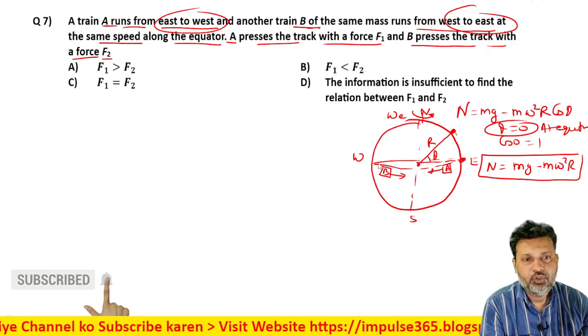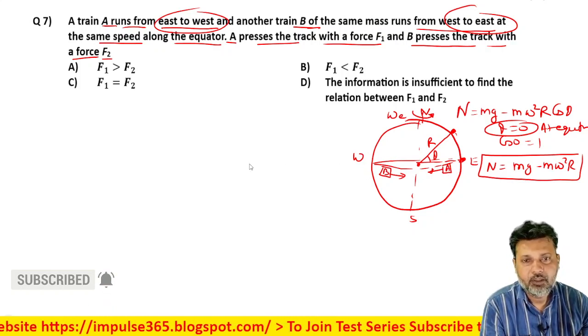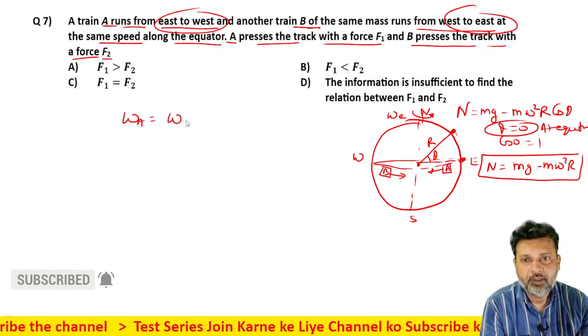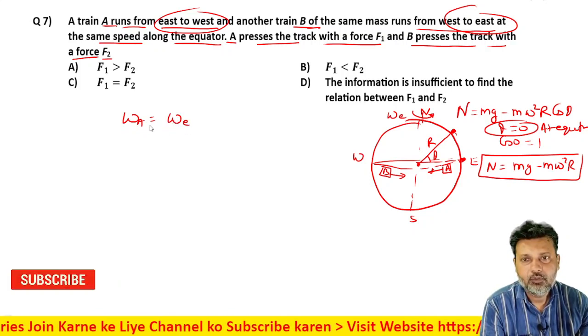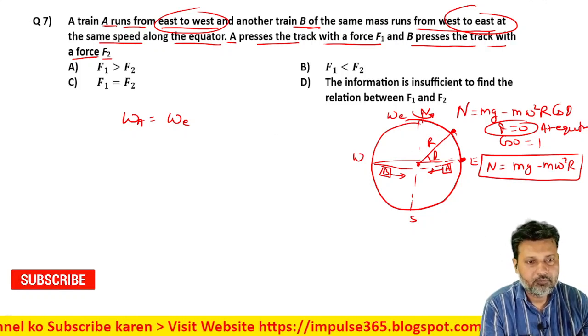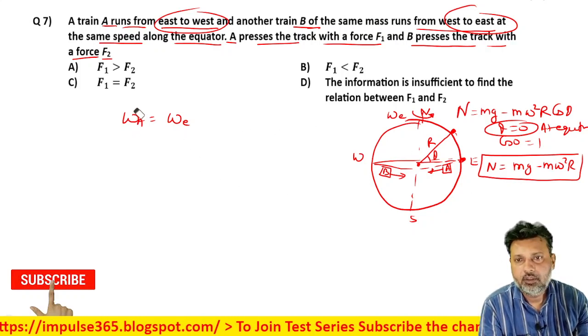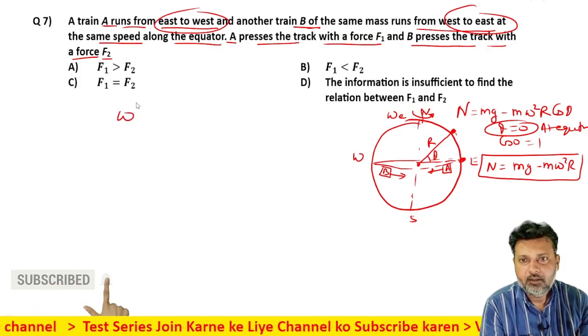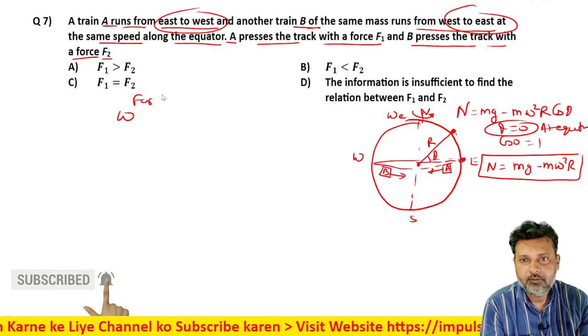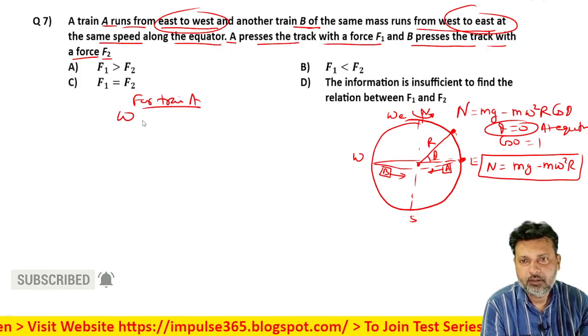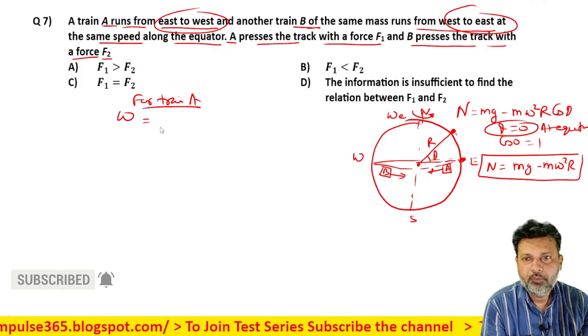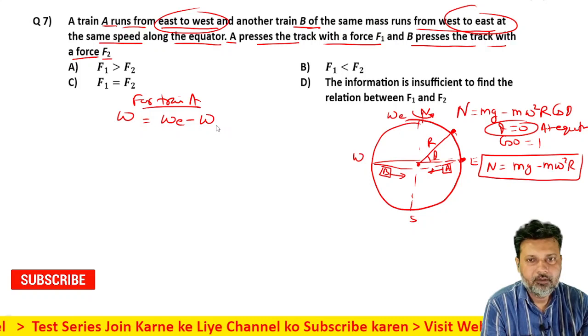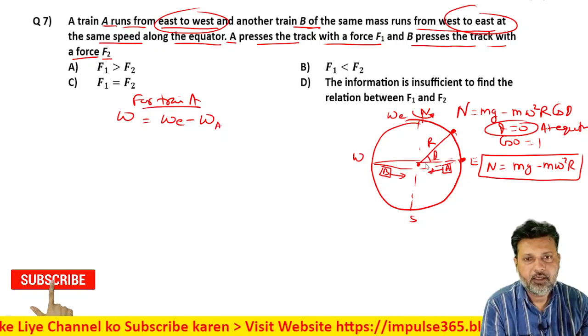Now in the first situation, in case of A, what will be omega_a's value? The net angular velocity will be omega_e minus omega_a for train A, because it's rotating in opposite direction to Earth's rotation.